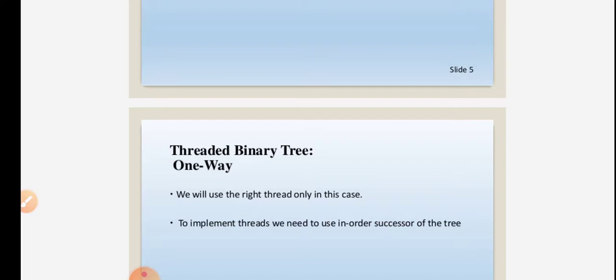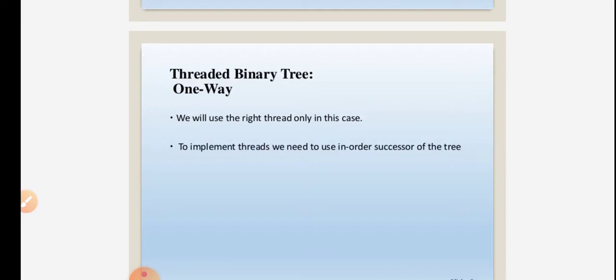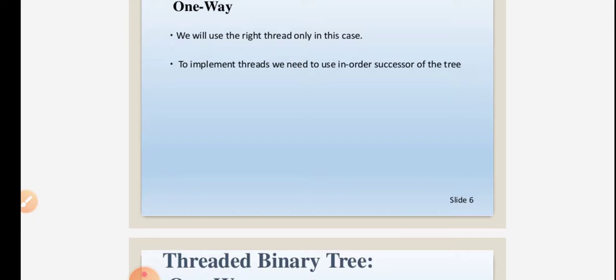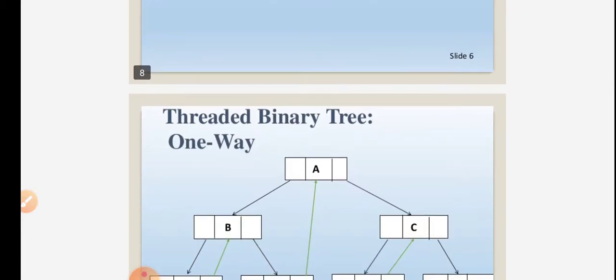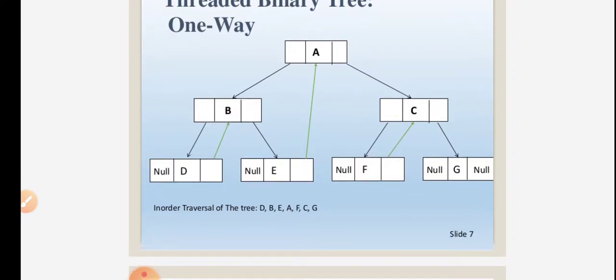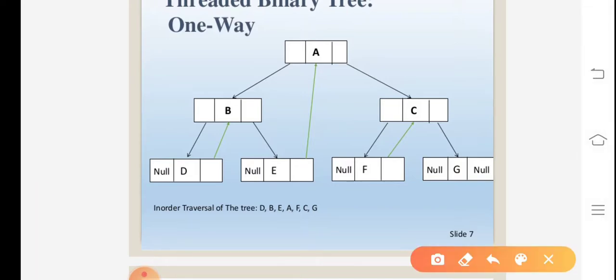First, let's discuss one-way threading. One-way means we will use only the right threads. To implement threads, we will use the in-order successor of the tree. A one-way threaded binary tree means only a single thread runs on the right side value, linking nodes.